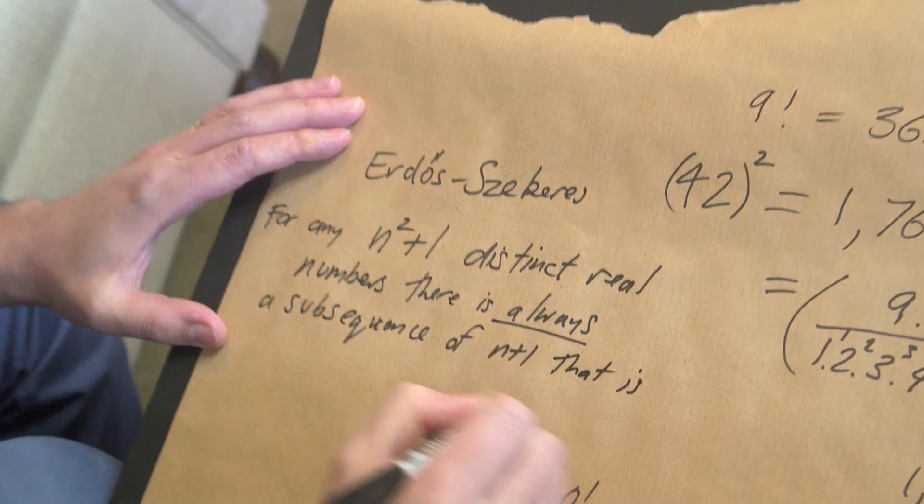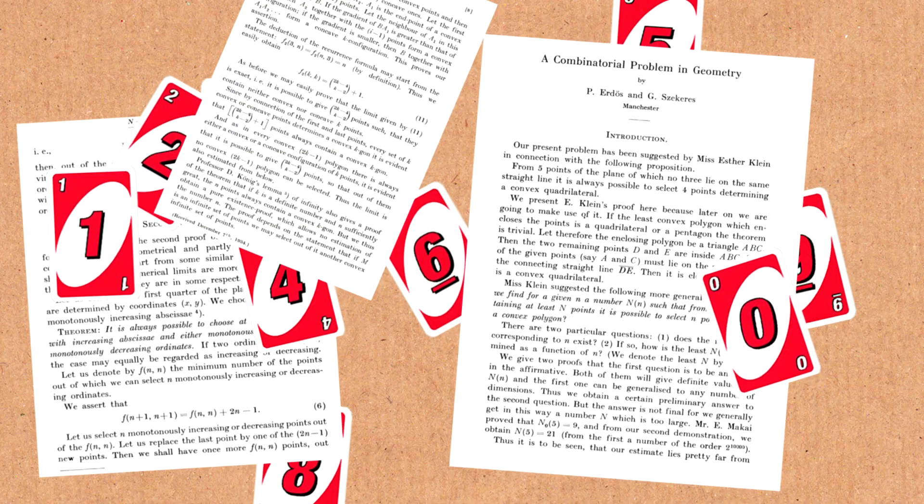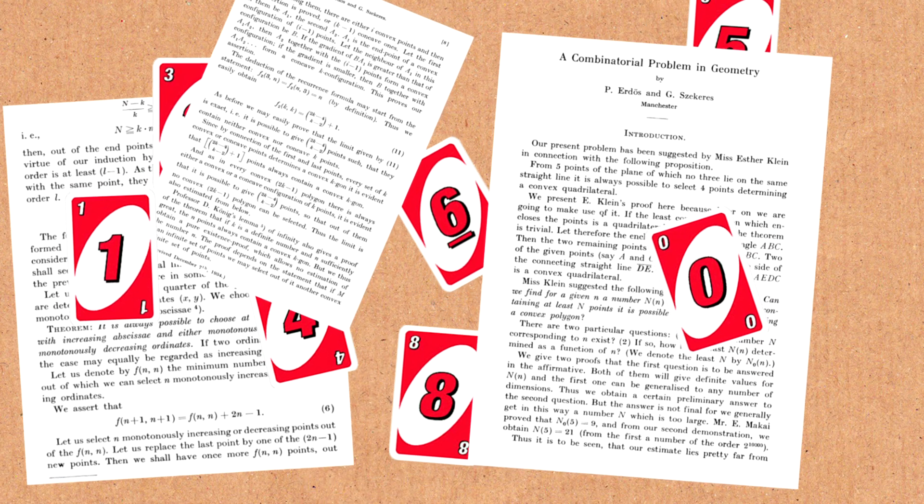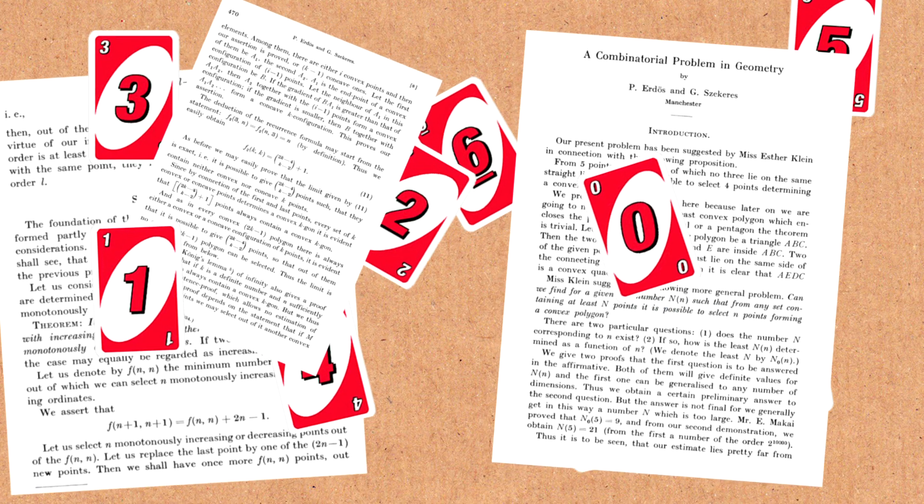That is ascending or descending. And a remarkable result, proven in 1935, which is kind of not that long ago when you think about it. But it's wonderful because it's order out of chaos.